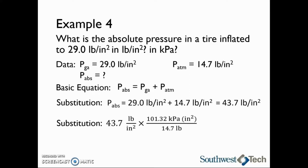We will take 43.7 pounds per square inch and then multiply that by the conversion factor that 101.32 kilopascals is equal to 14.7 pounds per square inch. This gives us an answer of 301 kilopascals. This concludes our discussion on air pressure.